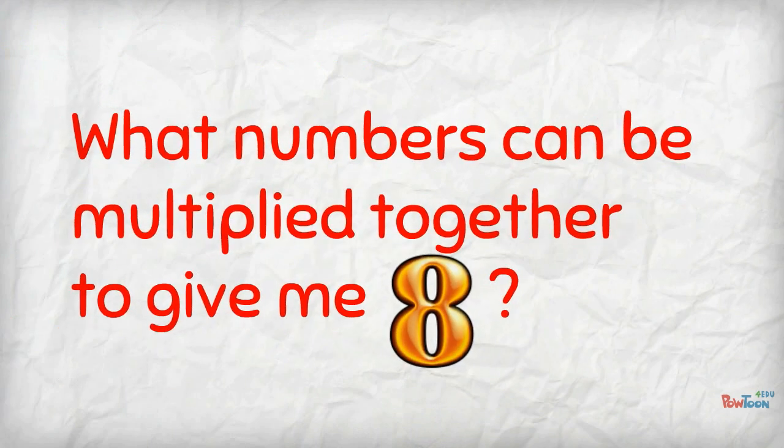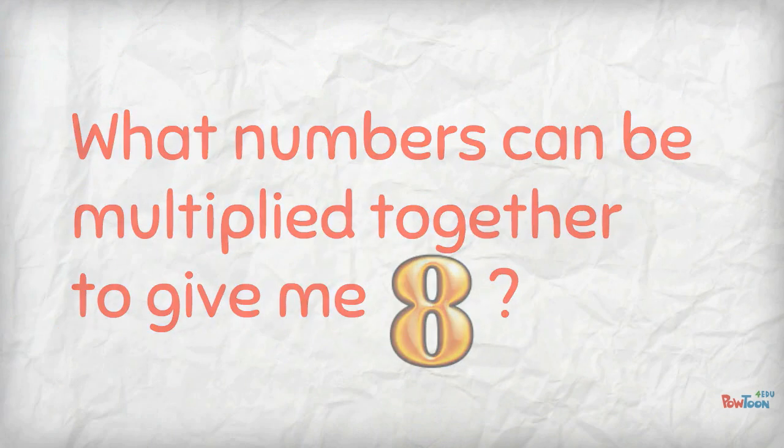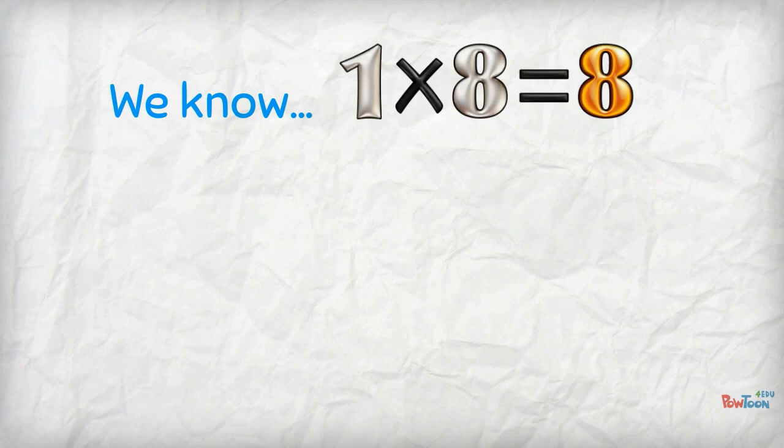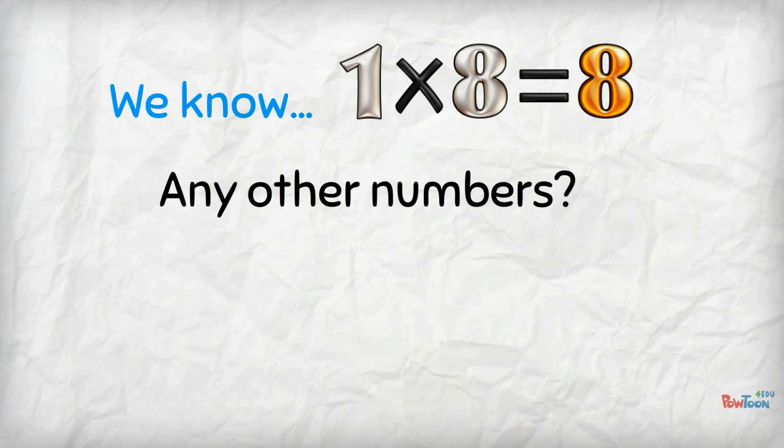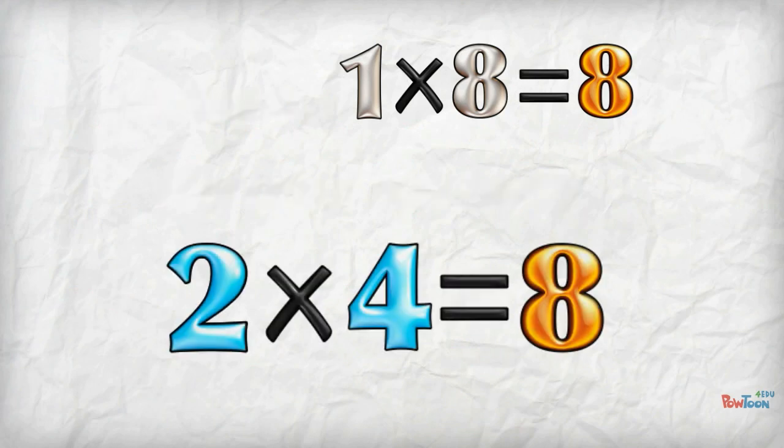What numbers can be multiplied together to give me 8? We know 1 times 8 is 8, but can we do it without using the factors 1 or 8? We can use 2. 2 times 4 is 8.